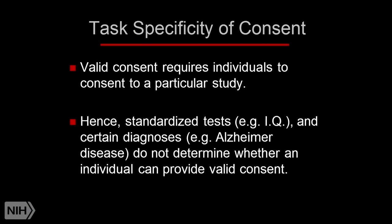A couple things about how we handle cases like this. The first is the buzzword in doing evaluations of consent, which is task specificity. The idea is that whether or not somebody can understand something and give consent to it obviously depends upon what that thing is. General tests of cognition — like a mini mental status exam or IQ test — can be valuable in certain settings, but typically they're not going to tell us whether someone can consent to a specific study. The way we figure that out is we explain that specific study to them and see if they can understand it.